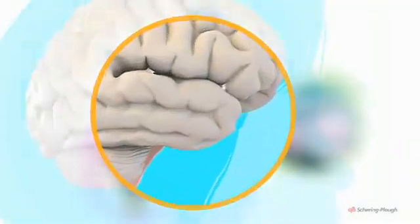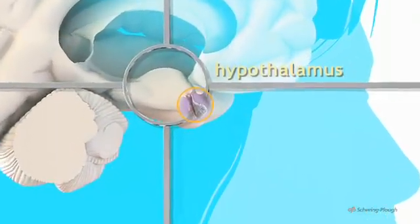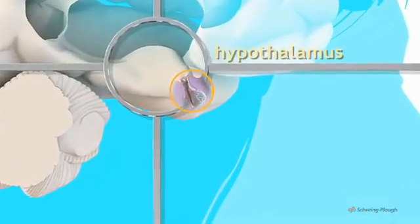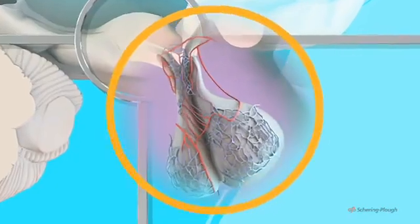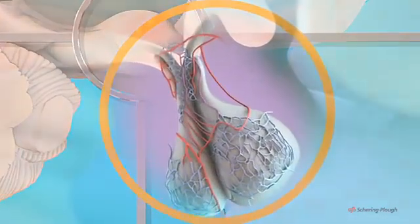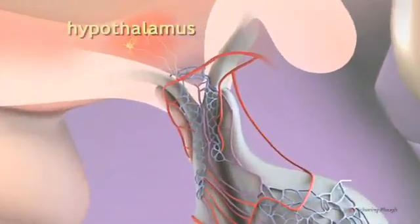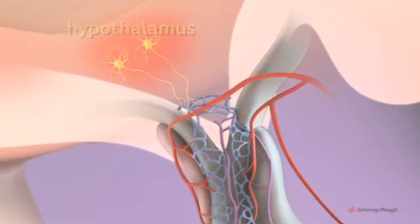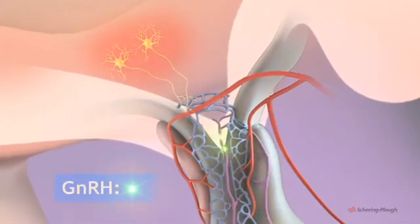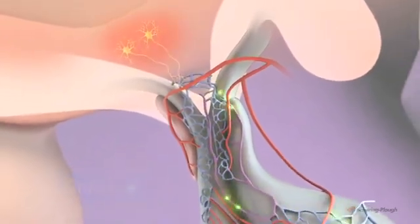The pituitary gland is itself under the control of this small area of the brain known as the hypothalamus. A new menstrual cycle begins when the nerve cells of this centre secrete a hormone called gonadotropin-releasing hormone, GNRH, into the network of blood vessels which surrounds the pituitary gland.